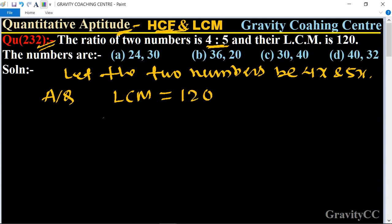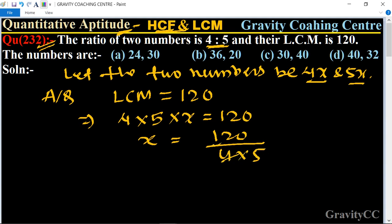According to the question, LCM of this number are given 120. So LCM of 4x and 5x is equal to 4 into 5 into x is equal to 120. So x is equal to 120 upon 4 into 5.